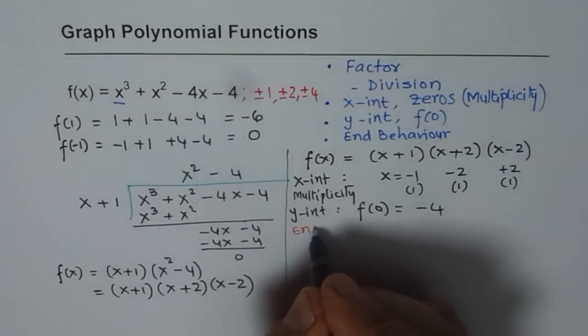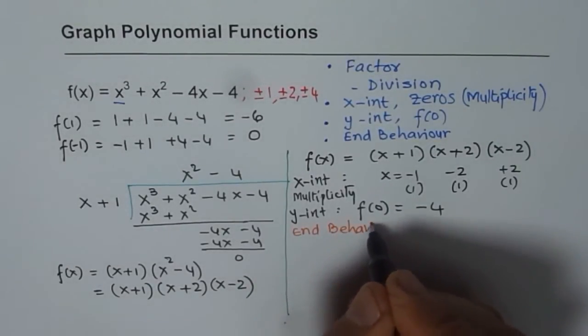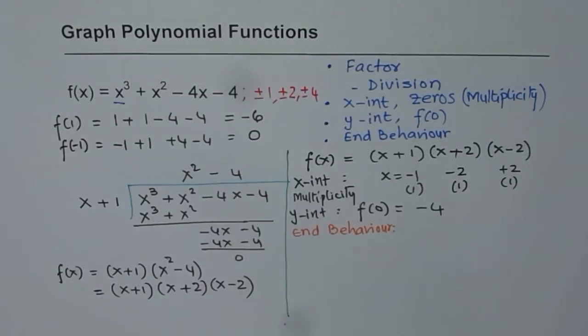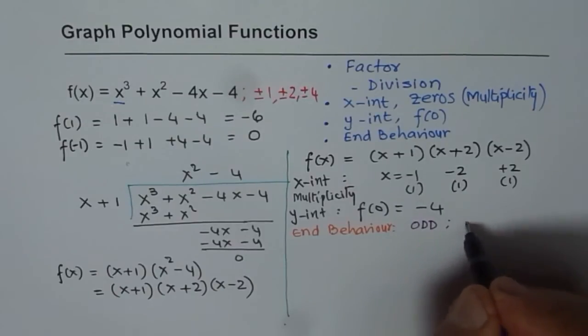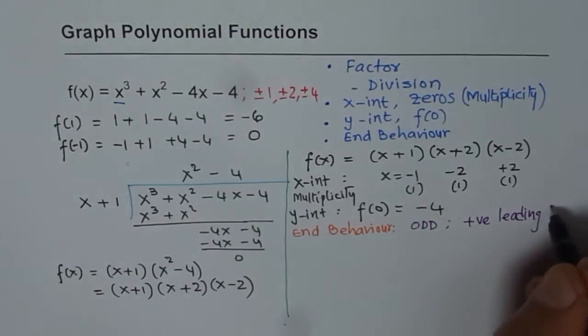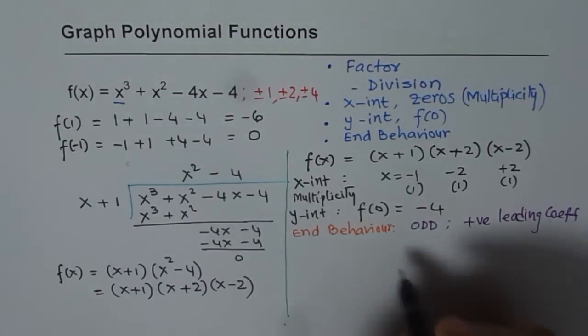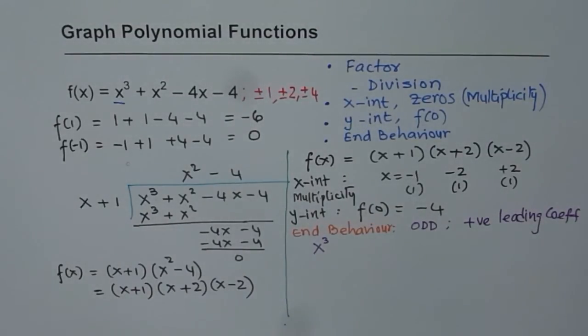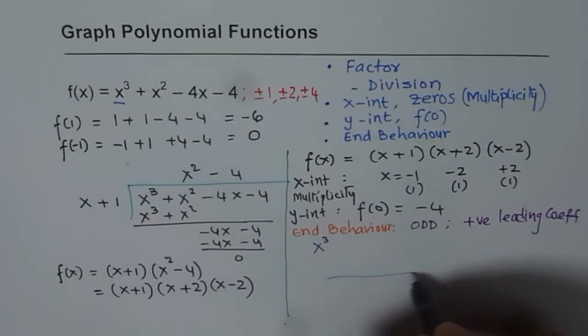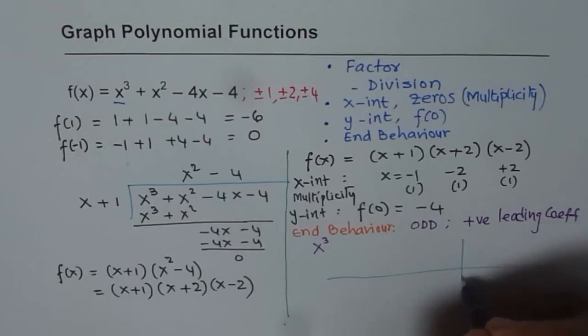So end behavior. End behavior is decided because of the leading term. What is the leading term? x³. So x³ is odd and positive leading coefficient. Since we are talking about x³, that is positive and odd. Now what does that mean? It's close to sketching. So let me sketch and show you right there on the graph itself.